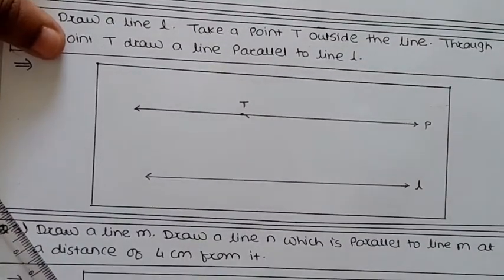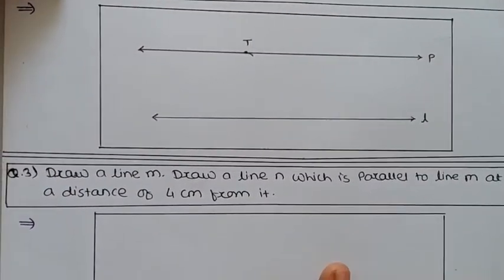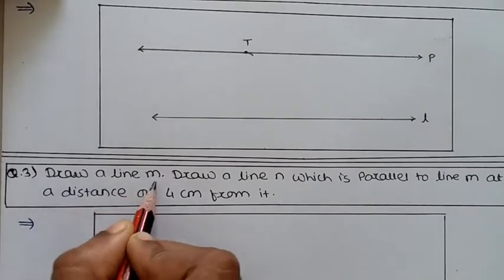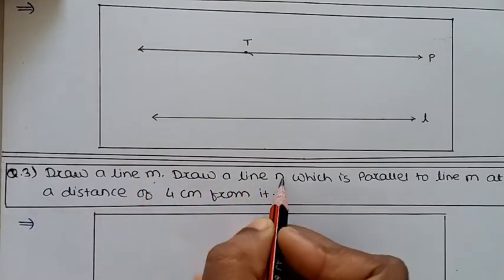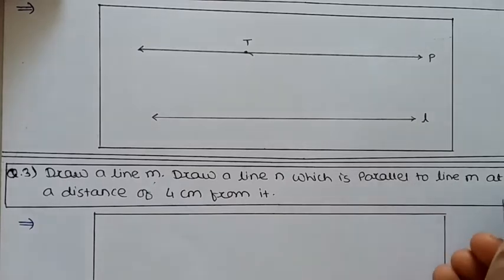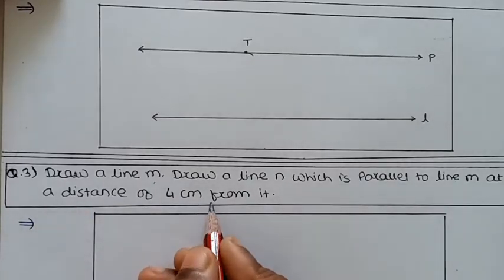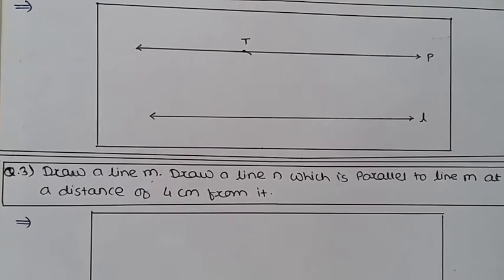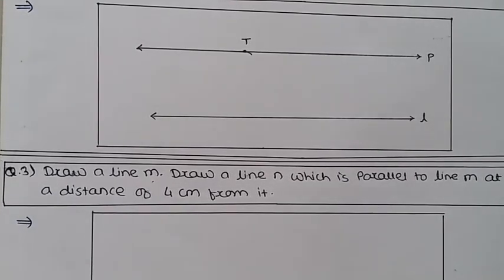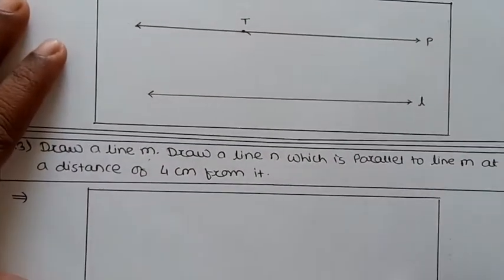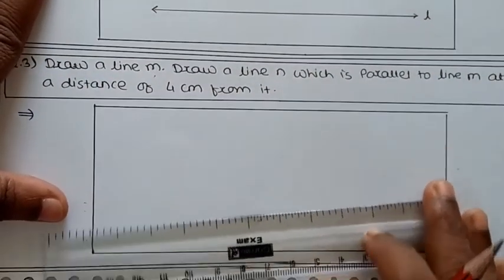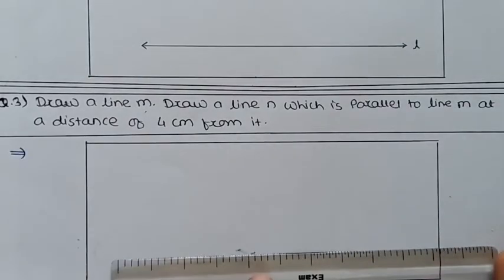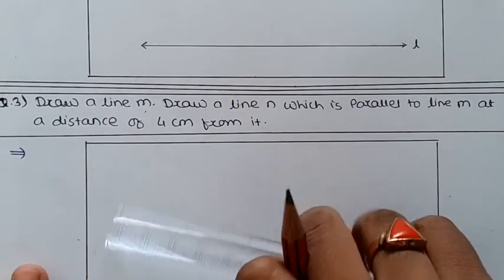Now we solve question number 3. The question is: draw a line L which is parallel to line L at a distance of 4 cm from it. We have to draw two parallel lines where the distance between them is 4 cm. First of all, draw line L using the scale.